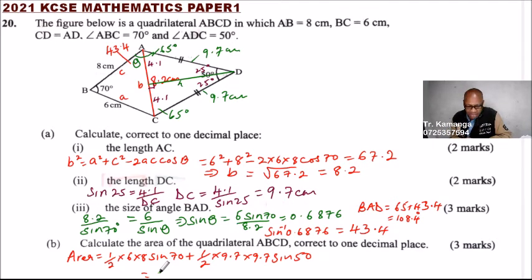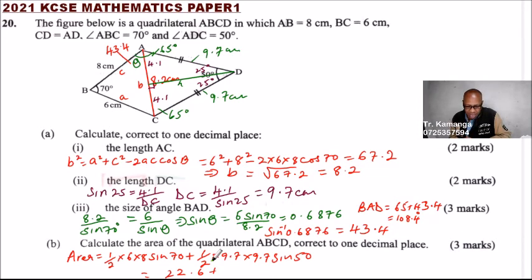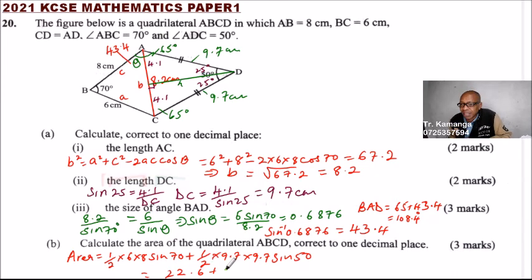For triangle ABC: one half times 6 times 8 times sine 70 gives us 22.55, so approximately 22.6. For triangle ADC: 0.5 times 9.7 times 9.7 times the sine of 50 gives us 35.99, which rounds to 36.0.